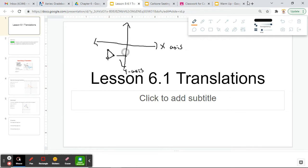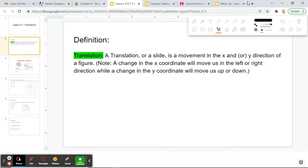So it basically slides it either left, right, up, or down, or if it does both at the same time and makes a diagonal line. For an actual mathematical definition, a translation or a slide is a movement in the x and or y direction of a figure. Note here, a change in the x-coordinate is going to move us in the left and right direction, while a change in the y-coordinate moves us up or down.